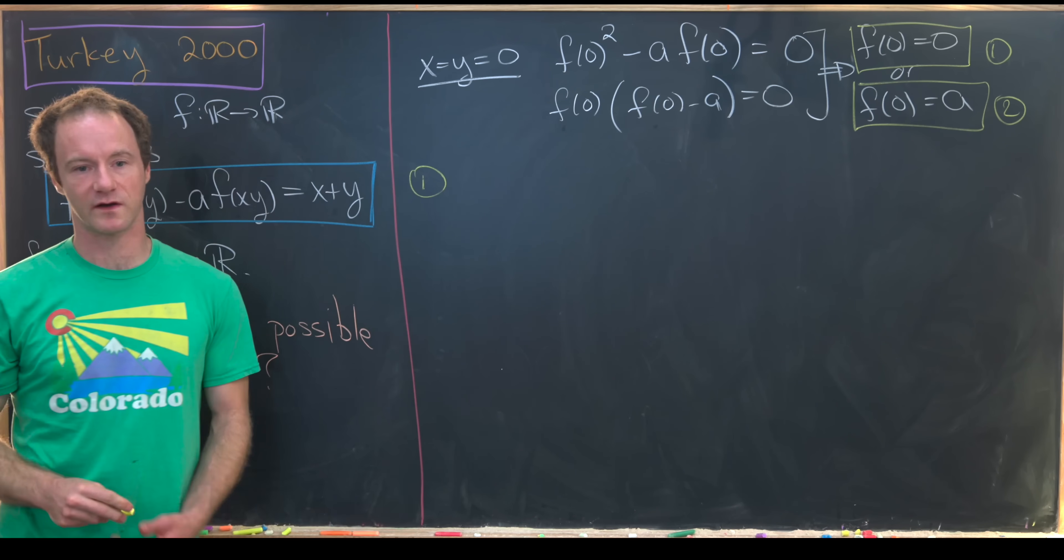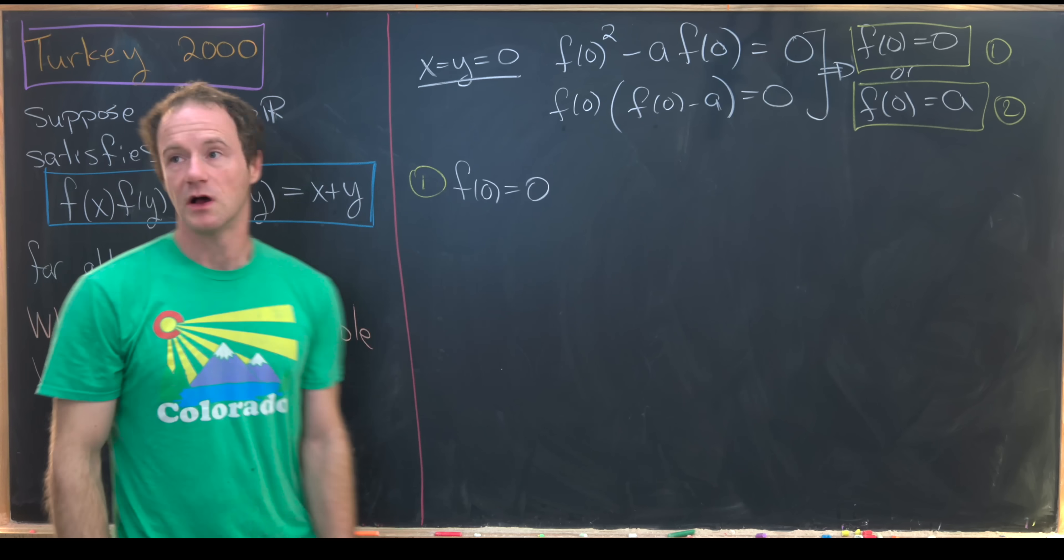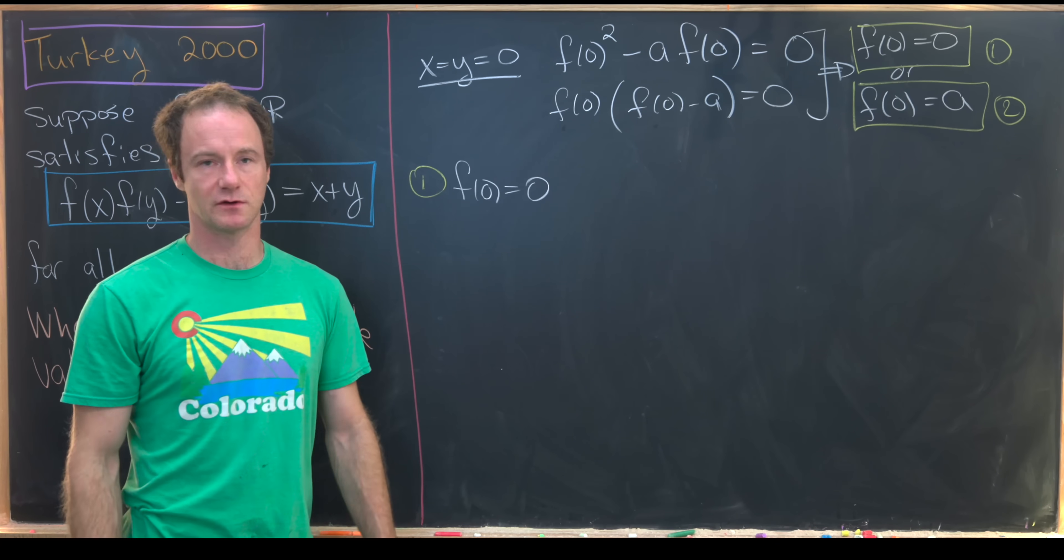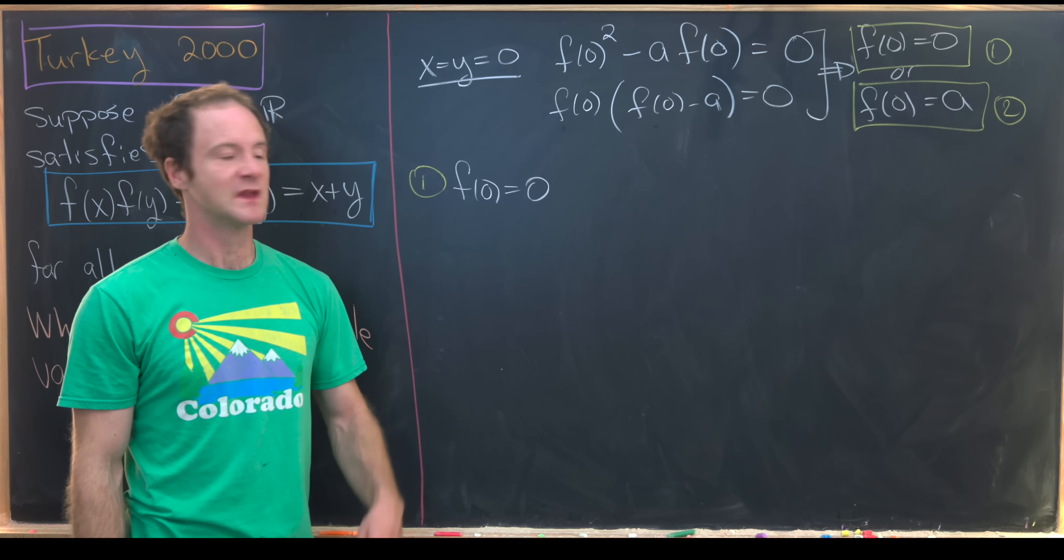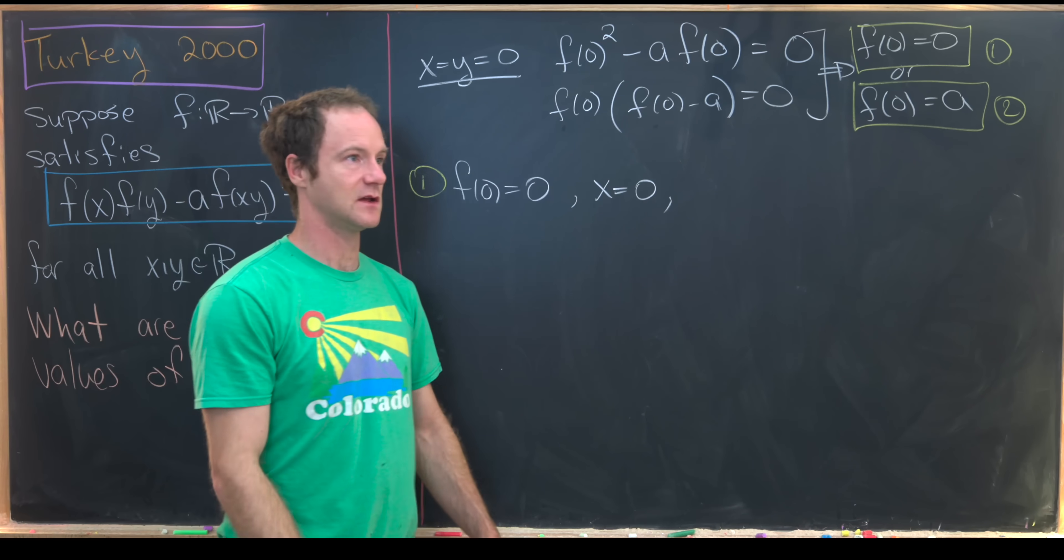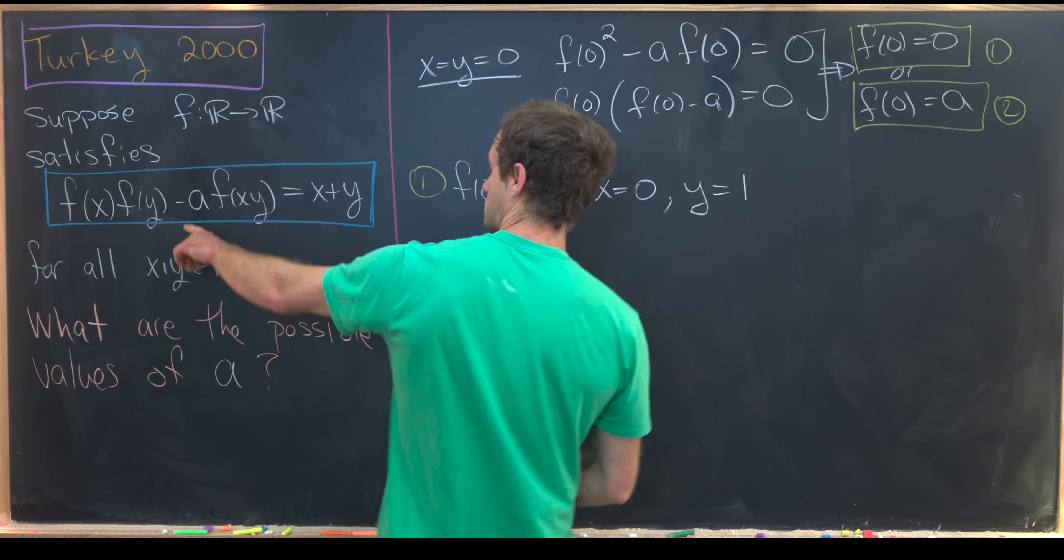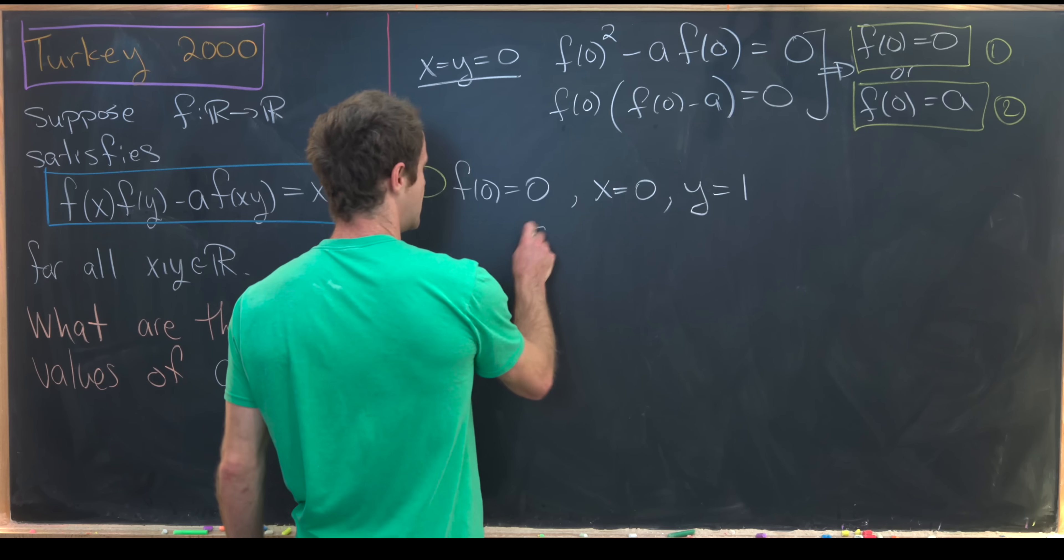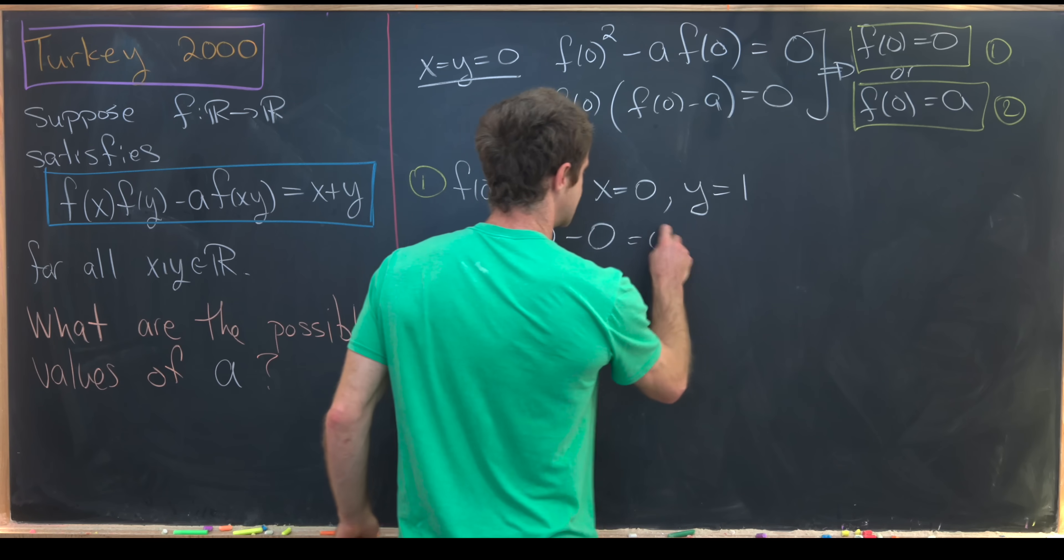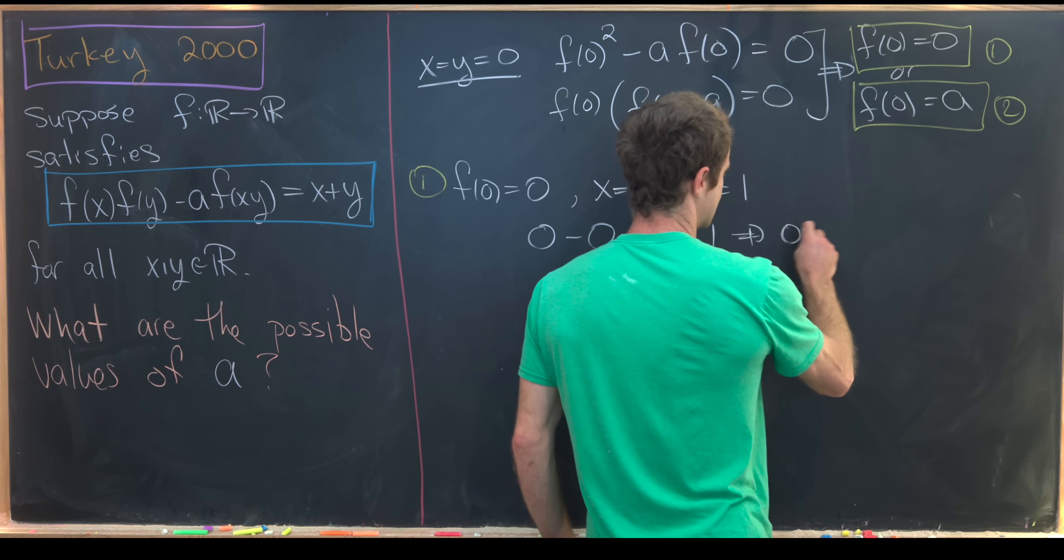Let's look at case number one first. Let's suppose that f(0) equals zero. Now let's plug some values into our functional equation. We don't want to plug in x equals y equals zero, because we already did that. That's not going to give us any new information. Let's take x equal to zero, and then y, you can really set that equal to anything. I'll set y equal to one. So over here, we'll have f(0) times f(1), but that's just zero minus a times f(0), so that's just zero as well, equals zero plus one.